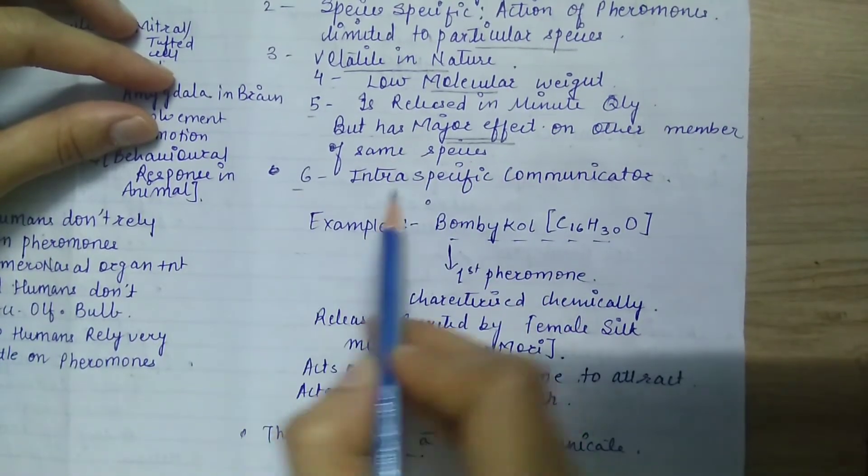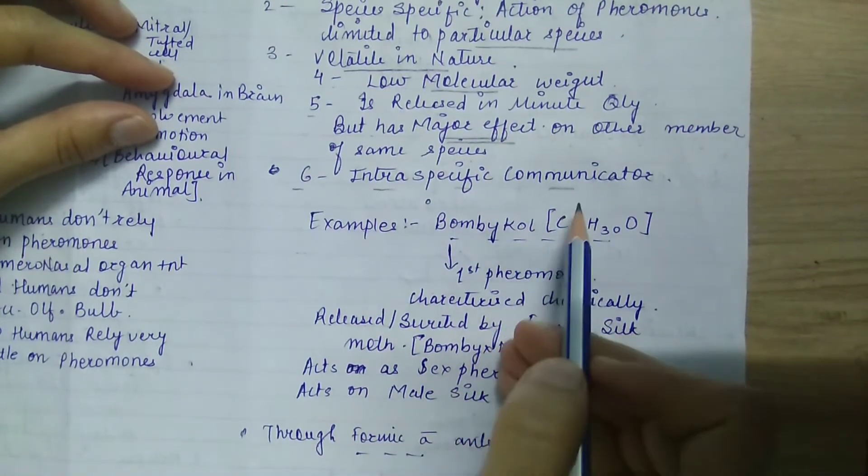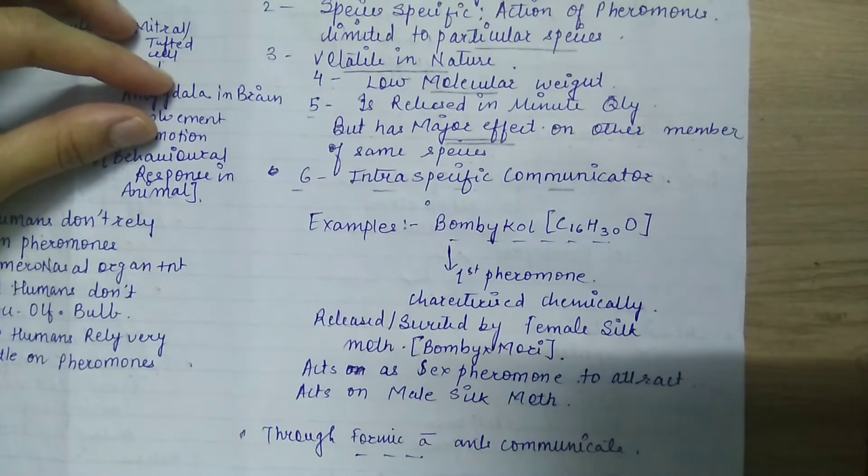Sixth point is intraspecific communicator. It acts like a communicator within one species—an intraspecific communicator. Let us check examples.